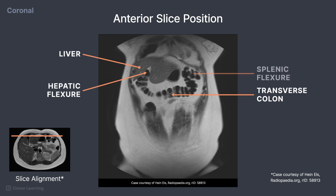and the splenic flexure visible on the opposite side. The rectus abdominis muscle again is visible, this time more inferior, but still just under the subcutaneous fat.